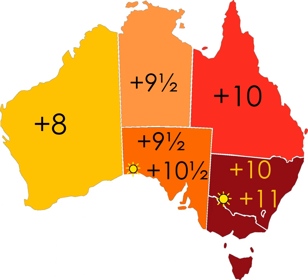Towns east of Caiguna on the Eyre Highway, including Eucla, Madura, Mundrabilla and Border Village just over the border into South Australia, follow Central Western Standard Time instead of Western Australian time. The total population of that area is estimated at 200 people. This area did not change when South Australia introduced DST. During the Western Australian trial of DST from 2006 to 2009, this area also set its clocks ahead one hour during summer. This time zone is not officially recognised, but is marked by official road signs.